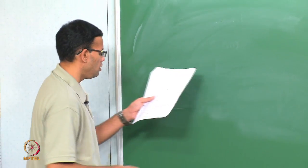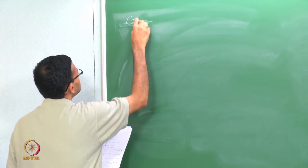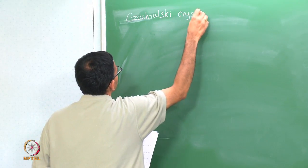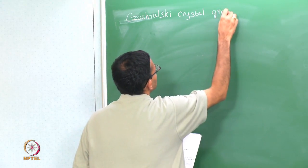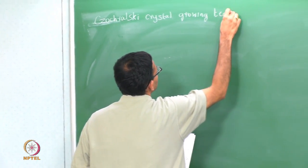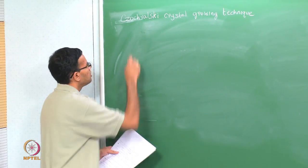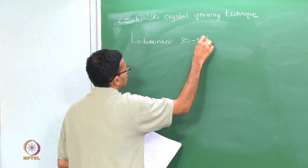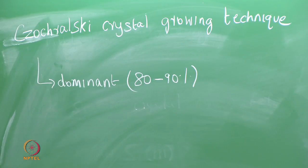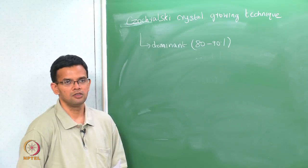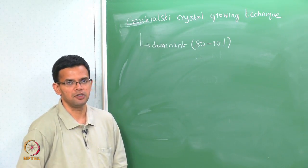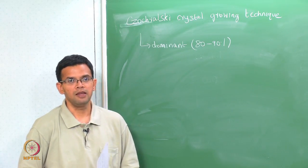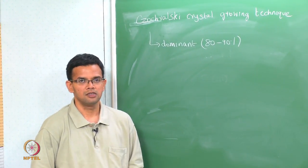The dominant method is called the Czochralski crystal growing technique. This is the dominant technique for producing silicon wafers — nearly 80 to 90% of wafers are grown by this technique. It is especially suited for making single crystals of large wafers; currently we use 12-inch or 300-millimeter wafers in the industry, and the transition is going to 18-inch or 450-millimeter wafers.